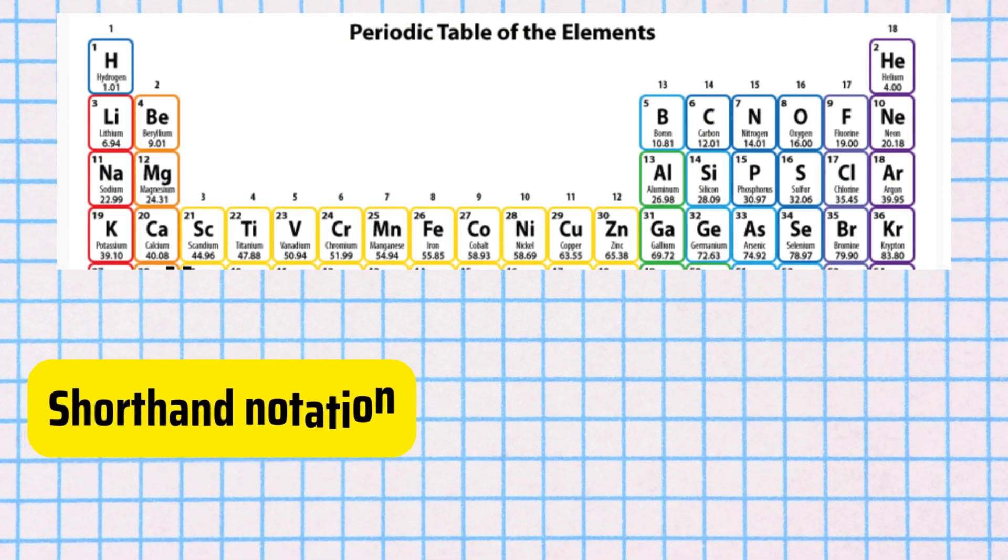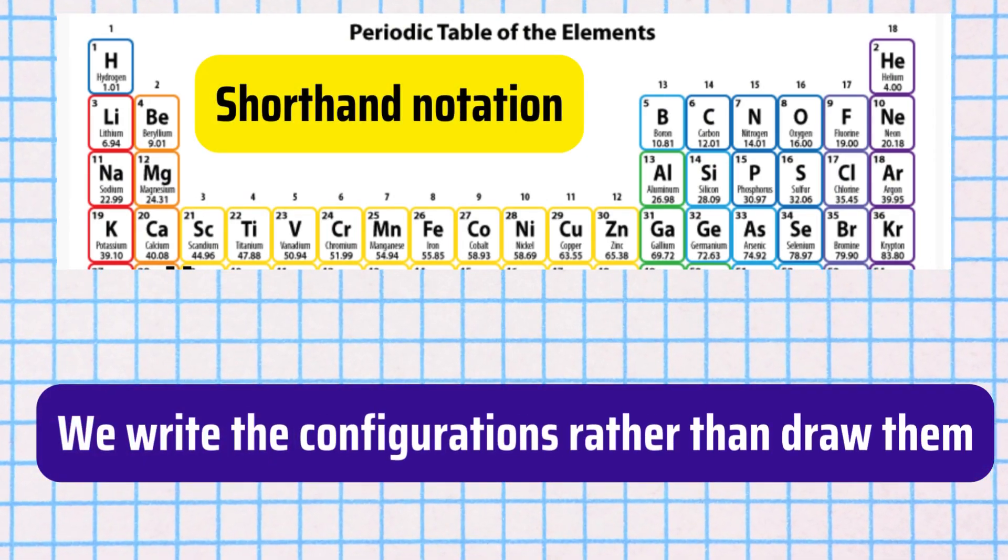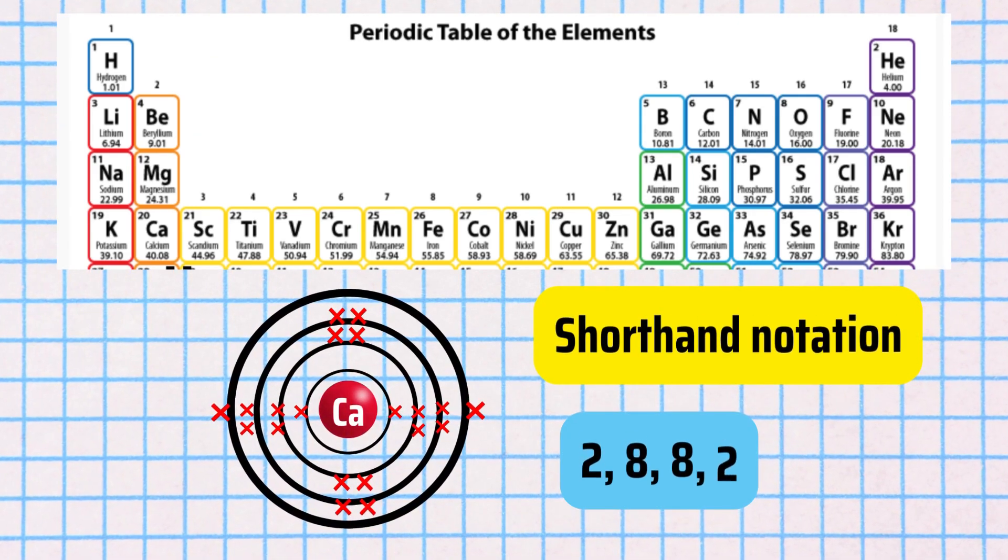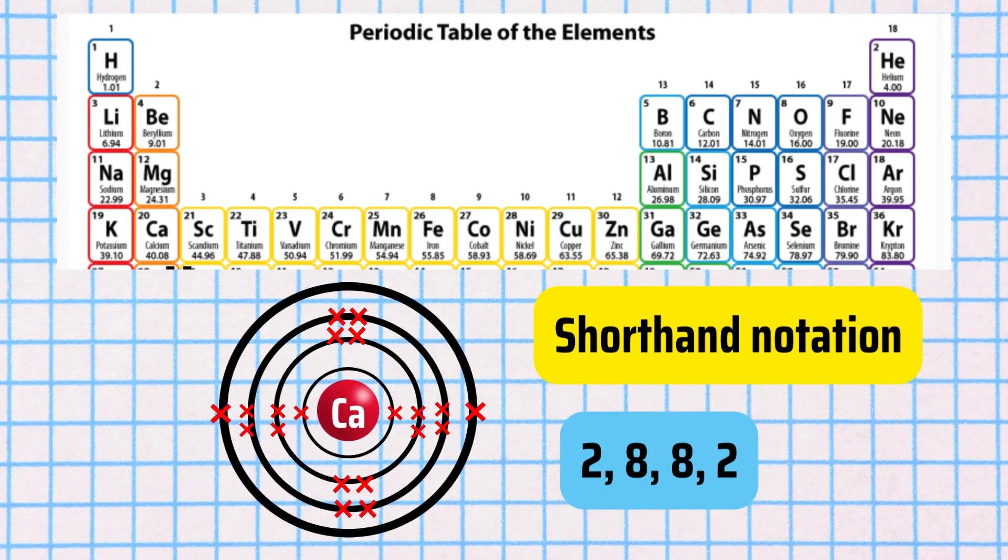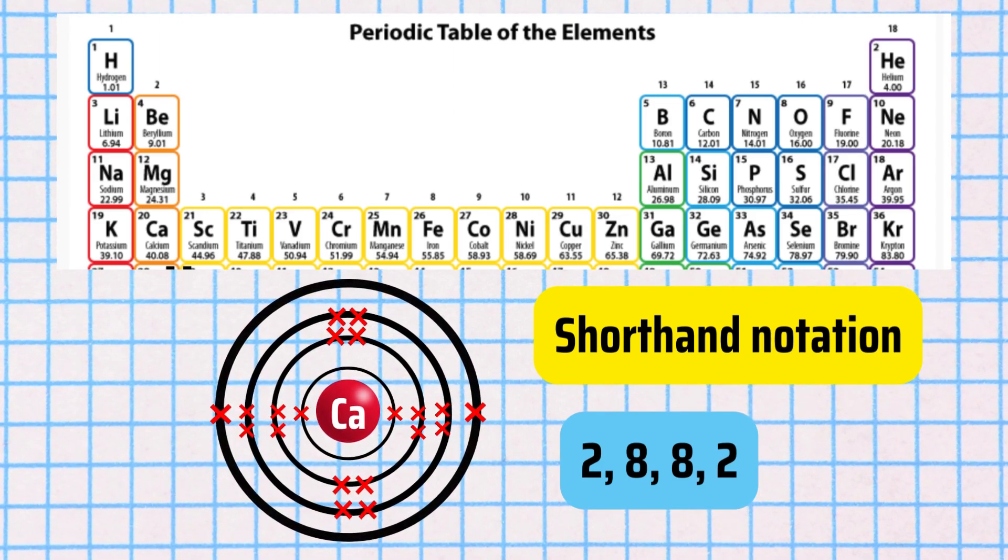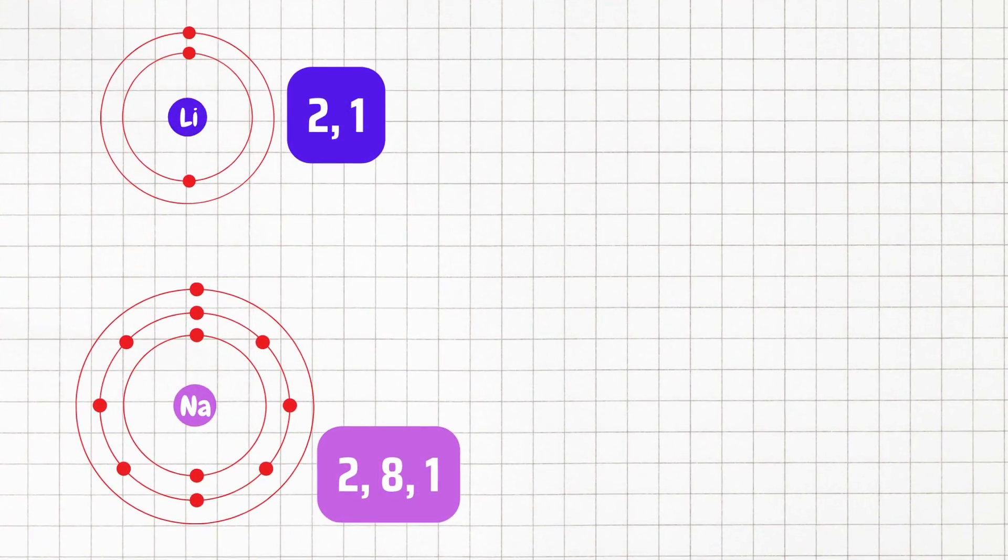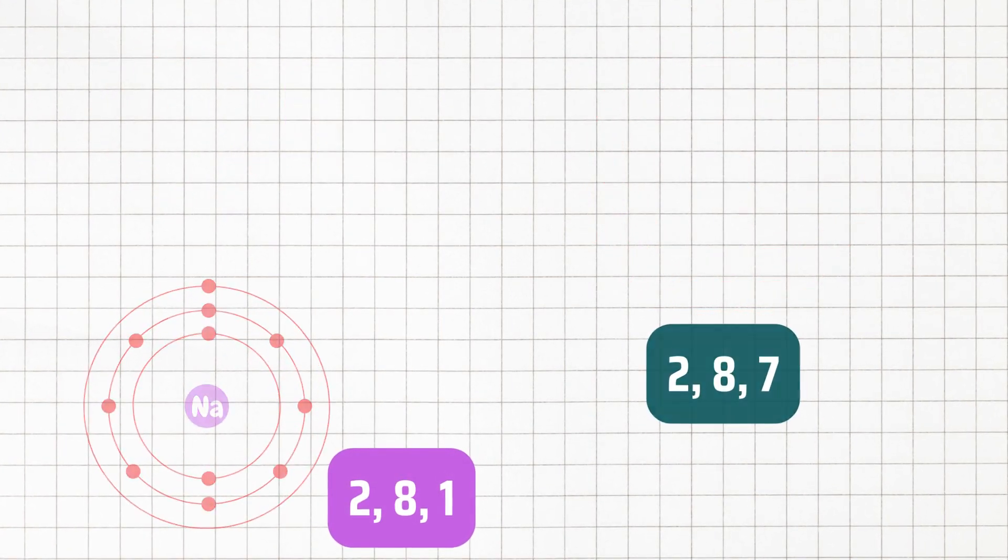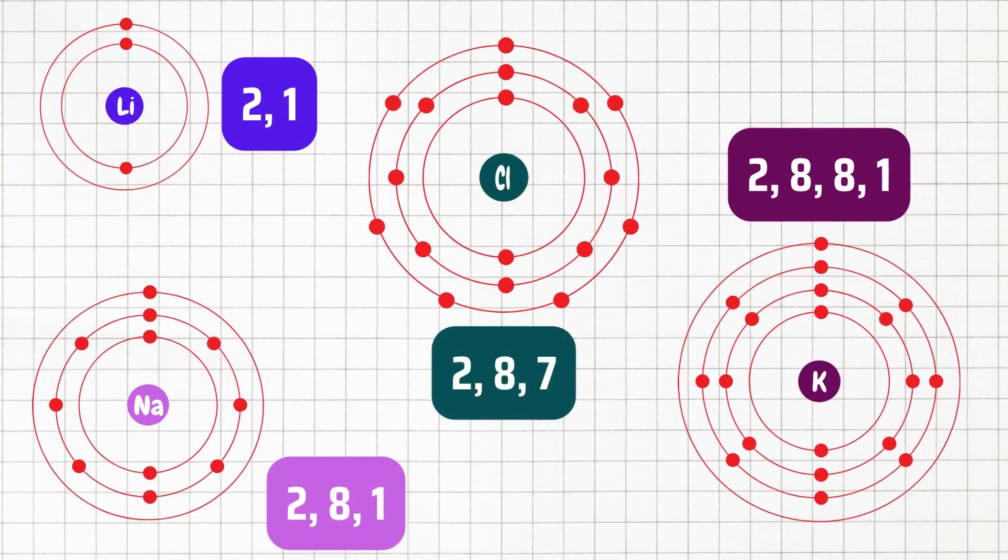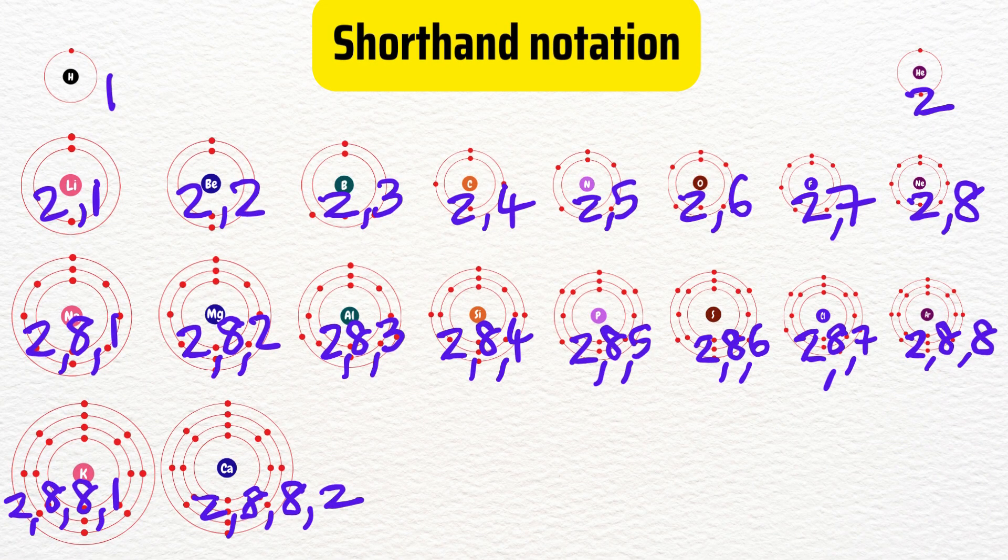The electron configurations can be done using the shorthand notation where we write the configurations rather than draw them. Calcium will be 2882. Here the electron shells are separated by commas. Lithium will be 2 comma 1. Sodium will be 2 comma 8 comma 1. Chlorine will be 2 comma 8 comma 7. And potassium will be 2 comma 8 comma 8 comma 1. And here is the shorthand notation for all of the atoms from 1 to 20.